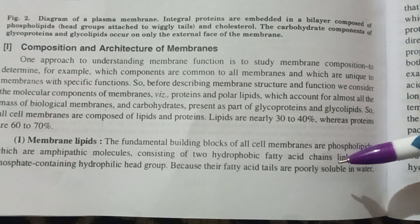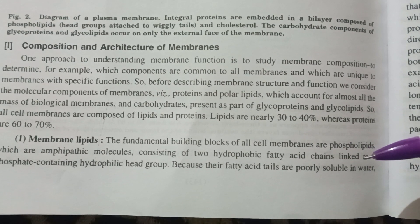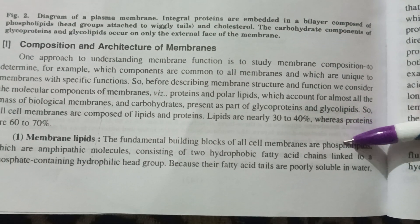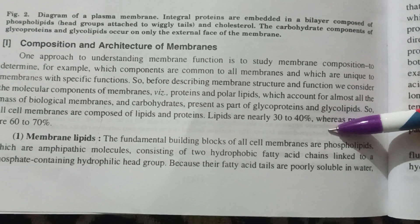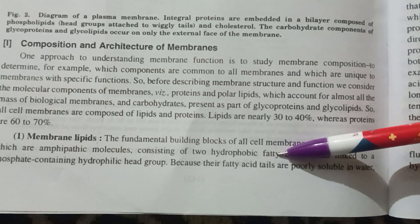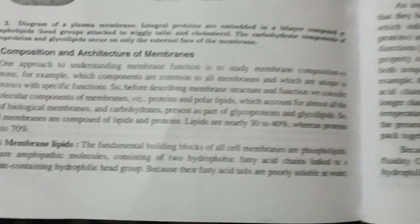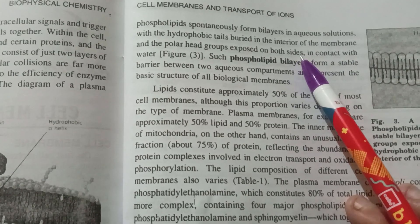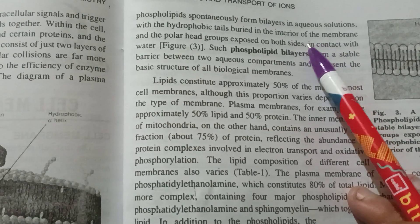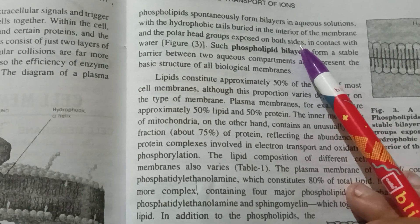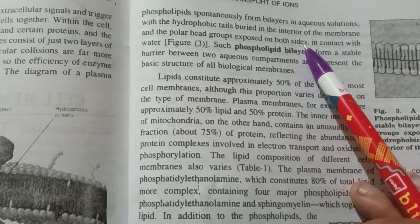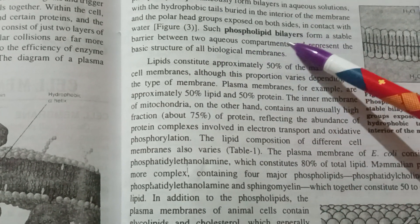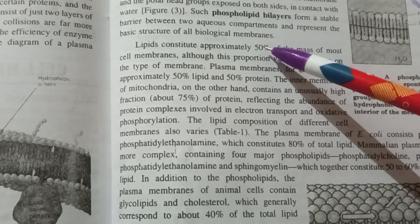The fundamental building blocks of the cell membrane are phospholipids, which are amphiphilic molecules consisting of two hydrophobic fatty acid chains linked with a phosphate-containing hydrophilic head group. Because their fatty acid tails are poorly soluble in water, phospholipids spontaneously form bilayers in aqueous solution, with the hydrophobic tails buried in the interior of the membrane and the polar heads exposed. There is a polar head exposed on both sides in contact with water. Such phospholipid bilayers form a stable barrier between two aqueous compartments, representing the basic structure of all biological membranes.